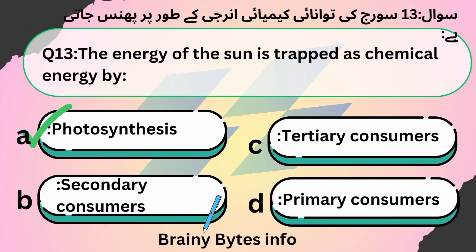The energy of the sun is trapped as chemical energy — option A — photosynthesis.